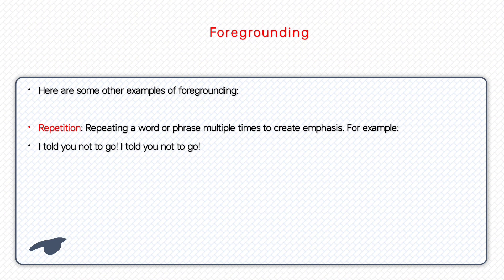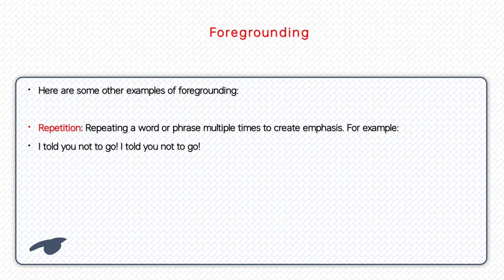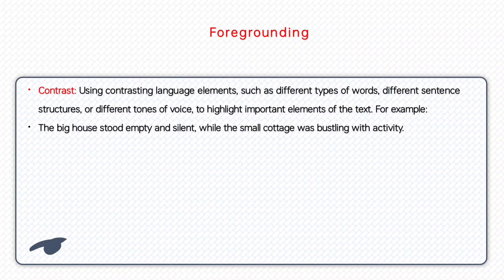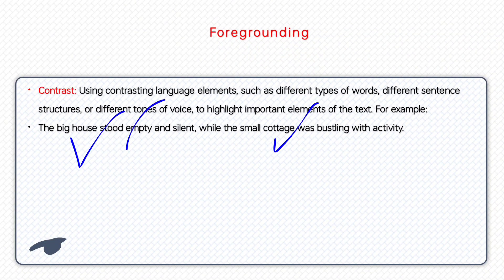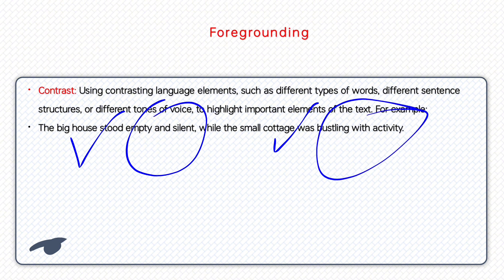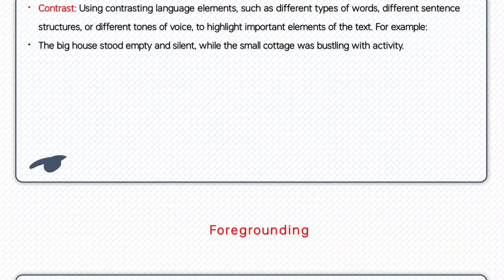Another technique is repetition — words and phrases are repeated multiple times to emphasize, for example: 'I'll tell you no, to go.' Contrast is another technique, where different elements in a text are highlighted to show importance. For example: 'The big house was empty and silent; the small cottage was bustling with activity.' Here contrasting words like big/small and empty/bustling are used to highlight and emphasize important words.